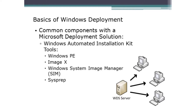ImageX is a tool used to do one of two things: gather information from the hard drive to make it the source of your image, or take an existing image — whether network-located, on a WDS server, or on a USB drive — and install that image onto the PC.